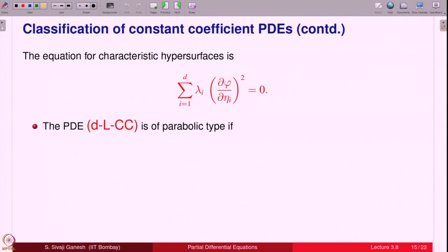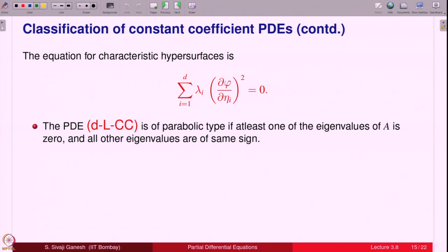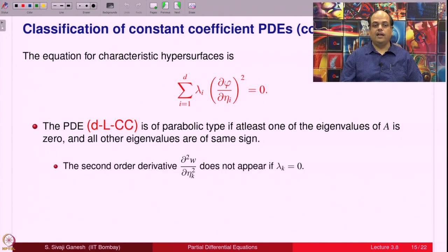For parabolic type: the definition says at least one independent variable should be missing in the principal part. If λ_k = 0, then ∂²w/∂η_k² does not appear in the new PP. So the PDE DLCC is of parabolic type if at least one eigenvalue of A is 0 and all other eigenvalues must be of the same sign.